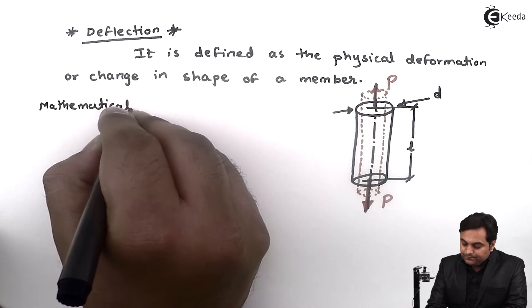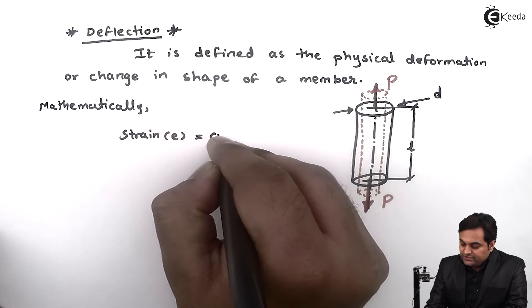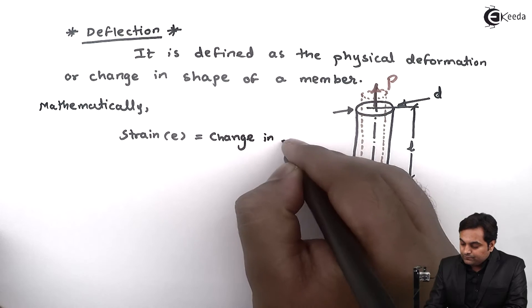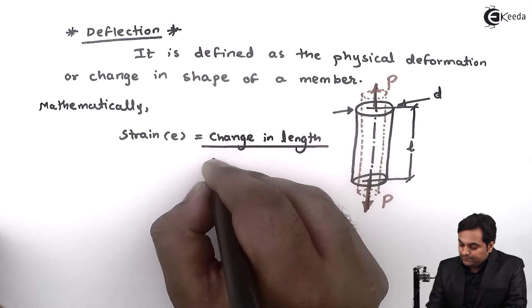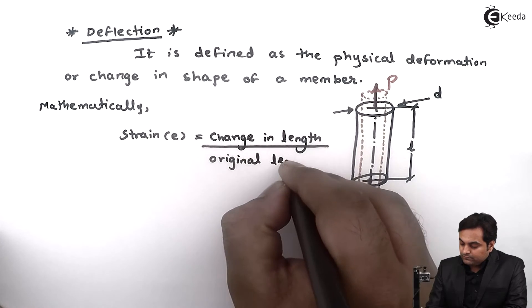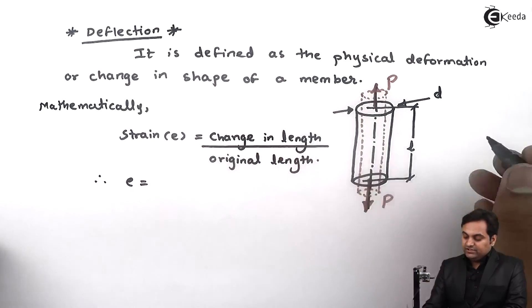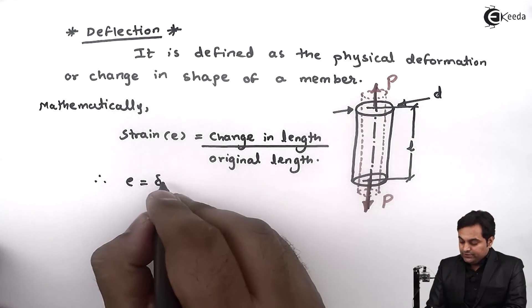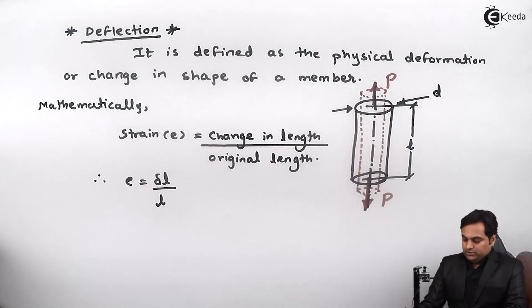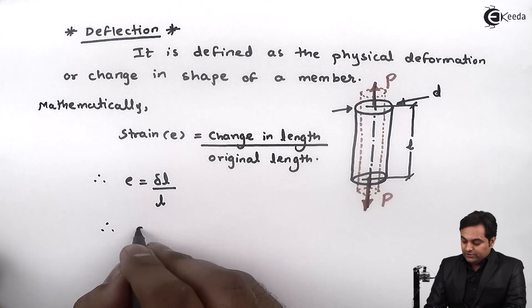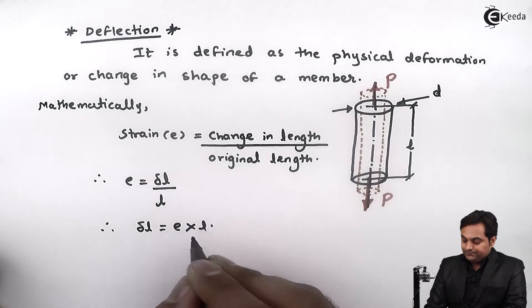Mathematically, strain is given by change in length upon original length. Therefore, strain equals δl over l. Now if we want deflection, I will keep deflection on one side and it is equal to strain into length.